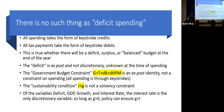There's no such thing as 'deficit spending' as a distinct act — all spending takes the form of keystroke credits, all tax payments take the form of keystroke debits. The deficit is exposed only at the end of the year; it's not discretionary. The government budget constraint is not a constraint at all — it's an ex post identity. At the end of the year, government spending equals tax revenue plus the change in bond holdings plus the change in reserve holdings. It cannot be a constraint on spending.